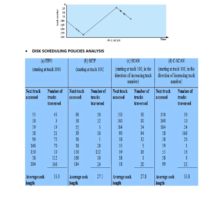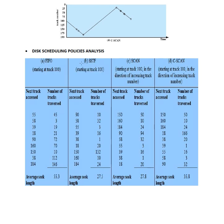Now let us see the disk scheduling policies. Here I have shown four different policies: FIFO or FCFS, SSTF, SCAN, and C-SCAN. The track accessed and track traversed are shown. The starting track is 100.